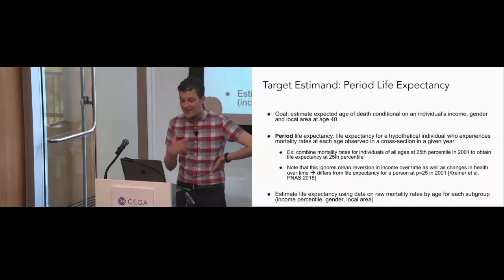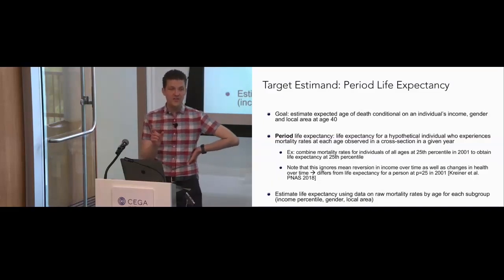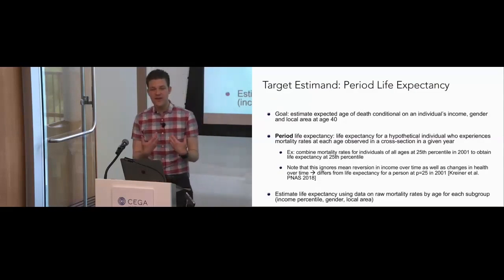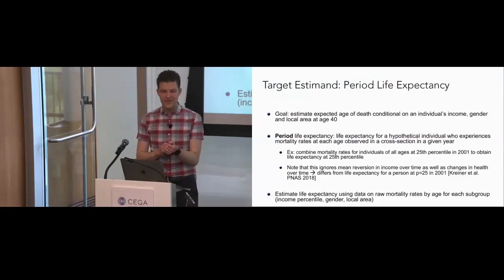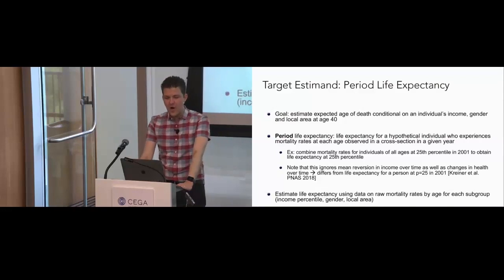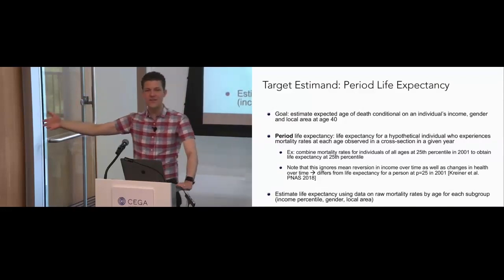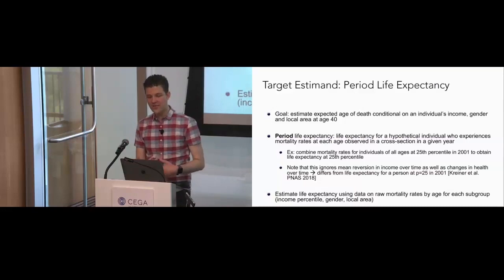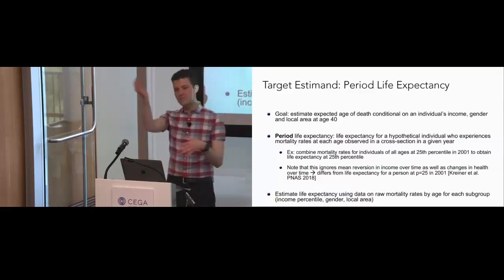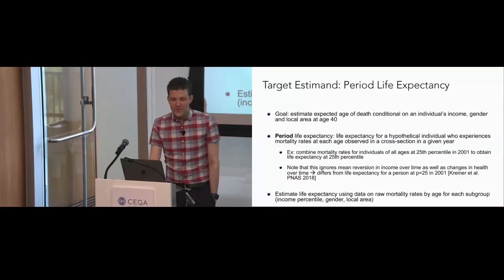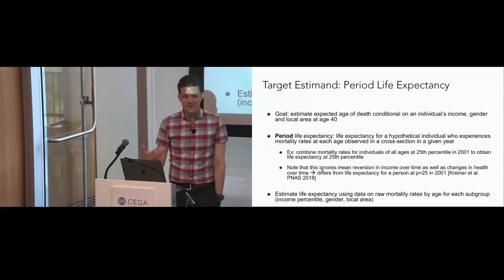What we're doing here is estimating life expectancy conditional on an individual's income, gender, and local area at age 40. For example, we're combining the mortality rates for everyone who was at the 25th income percentile in 2001 to obtain life expectancy at the 25th percentile. This period life expectancy is different from cohort life expectancy in two ways: we're not thinking about future medical innovations, and we're holding fixed someone's income in the future — not accounting for mean reversion or income growth over time.